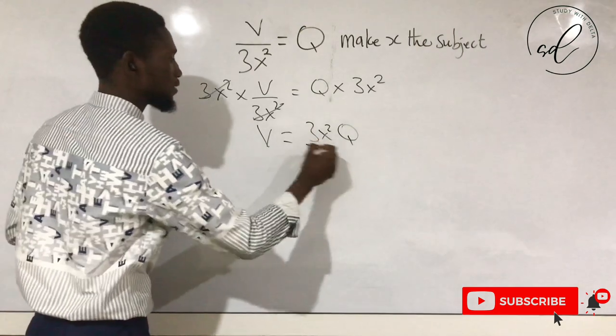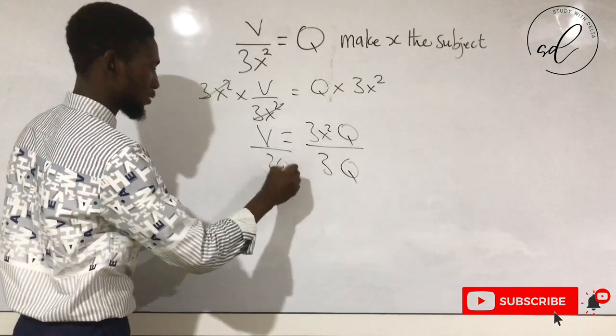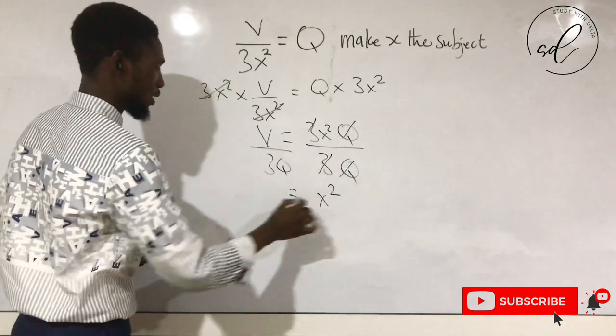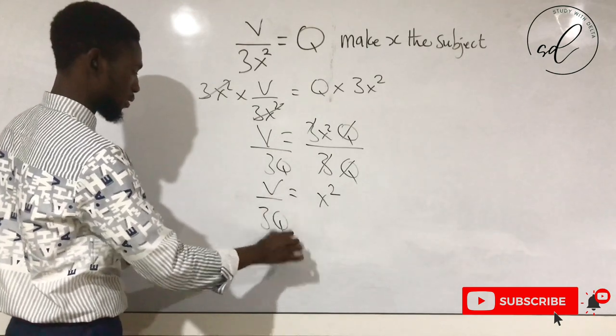So we divide both sides by 3Q. This takes care of the terms on both sides. You will be left with x squared equal to V over 3Q.